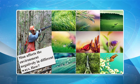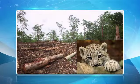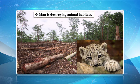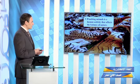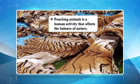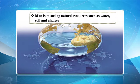Man affects the environment negatively in different ways. Man is responsible for polluting the environment. Man is also destroying animal habitats — these forests are the habitat of many exotic birds, animals, and butterflies. Poaching animals — meaning illegal hunting — is a human activity that affects the balance of nature. Man is also misusing natural resources such as water, soil, and air.